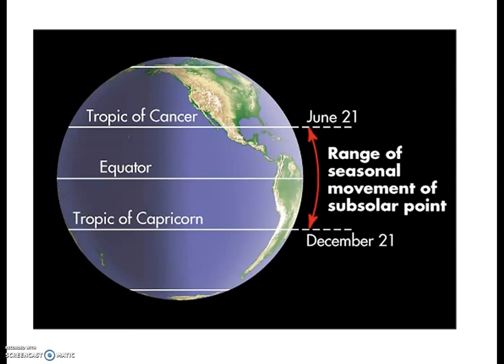With this information in mind, you can actually estimate the subsolar point for different times of the year. For example, you know the subsolar point for the March equinox is at the equator and for the June solstice it's at 23 and a half degrees north. So if you were asked what the subsolar point was for early June, say June 1st, you would guess it'd be between those two points and much closer to the solstice. Notably, there's a way you can be much more precise.